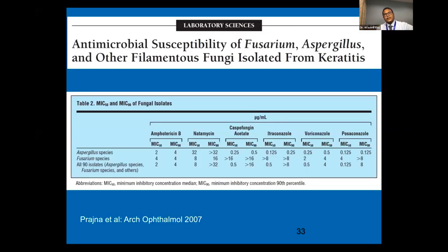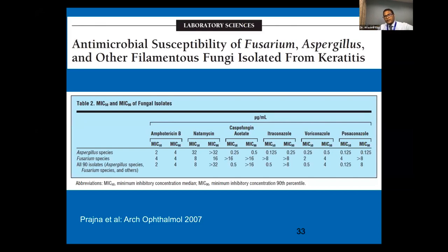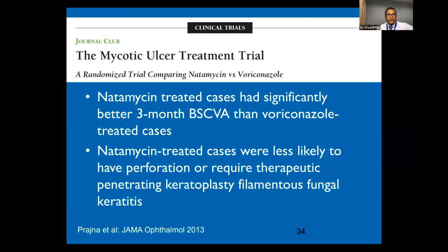A study on antimicrobial susceptibility of filamentous fungus found that caspofungin and the triazoles are much more effective with lower minimum inhibitory concentrations. The MIC50 and MIC90 values are significantly lower compared to natamycin, and the newer drugs are much more sensitive in killing fungus. However, the question is whether this actually translates to clinical benefit.